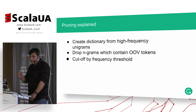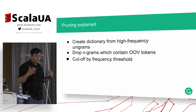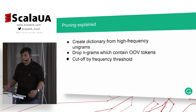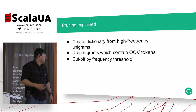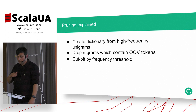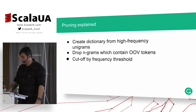Pruning is a pretty straightforward procedure. We create a dictionary by getting unigrams — which are just tokens, one token per word — and form a dictionary. Then we drop n-grams that contain at least one out-of-vocabulary token, and then cut the n-grams with the lowest frequencies by some threshold.